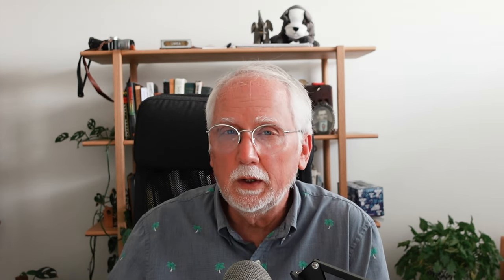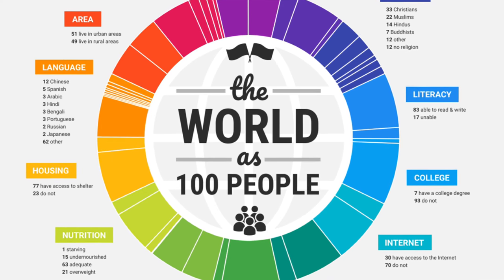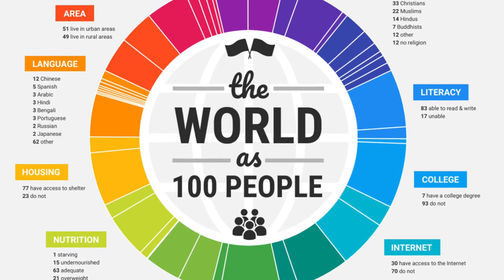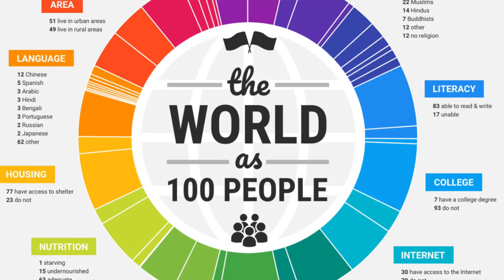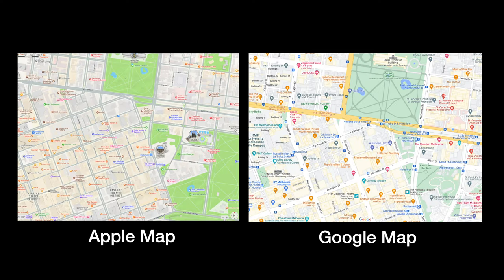Principle six: good gestalt, or pragnance. We simplify complex images into more organized forms. Infographics, when they're done well, can simplify complex data into an easily digestible visual format. Good mapmaking also requires attention to this principle. Notice how Apple and Google Maps try to take complex data and organize it in as simple a way for the user as possible. The makers of the maps have to use color, fonts, shading, images, etc. to provide the simplest map that conveys the most information.